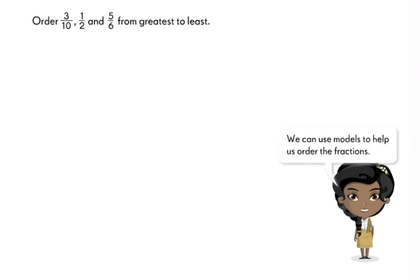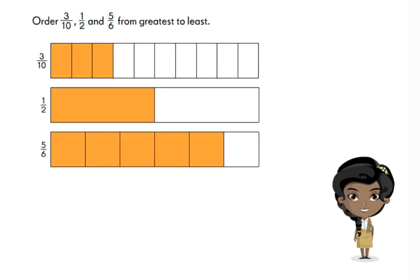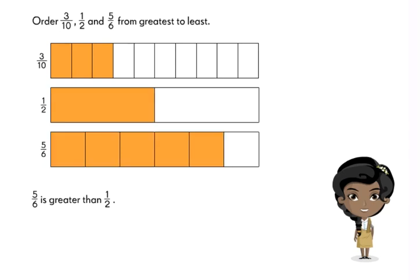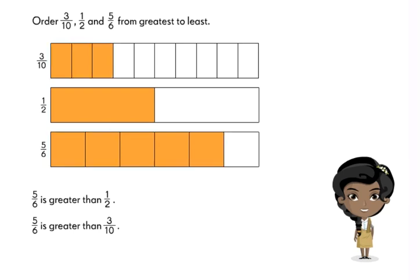We can use models to help us order the fractions. The models show that 5 sixths is greater than 1 half. 5 sixths is also greater than 3 tenths. So 5 sixths is the greatest.